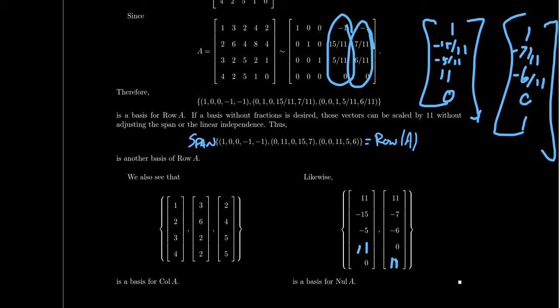There is a fourth fundamental space known as the left null space, which we will introduce in chapter four. Its basis is a bit more technical and will involve orthogonality conditions that we have not yet introduced, which is why we delay that one until then.